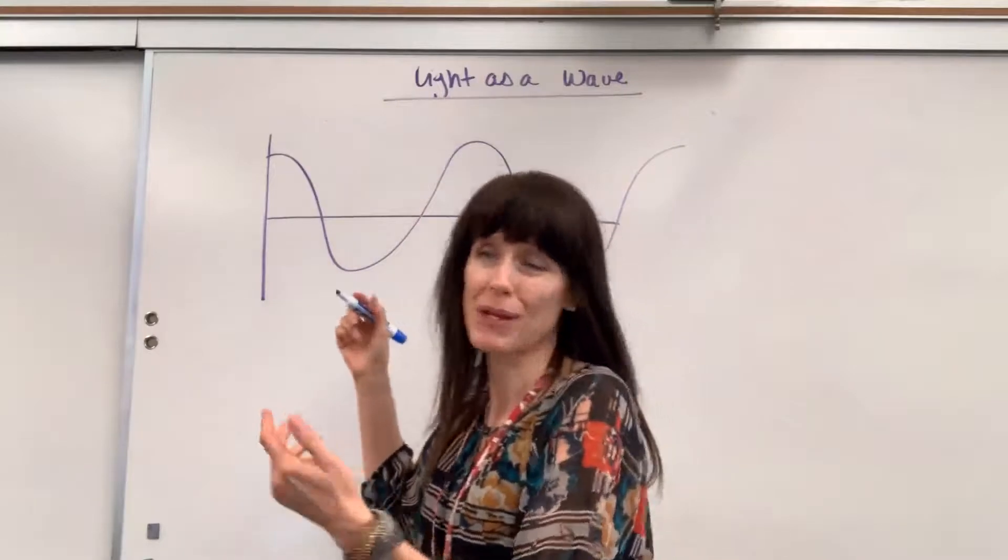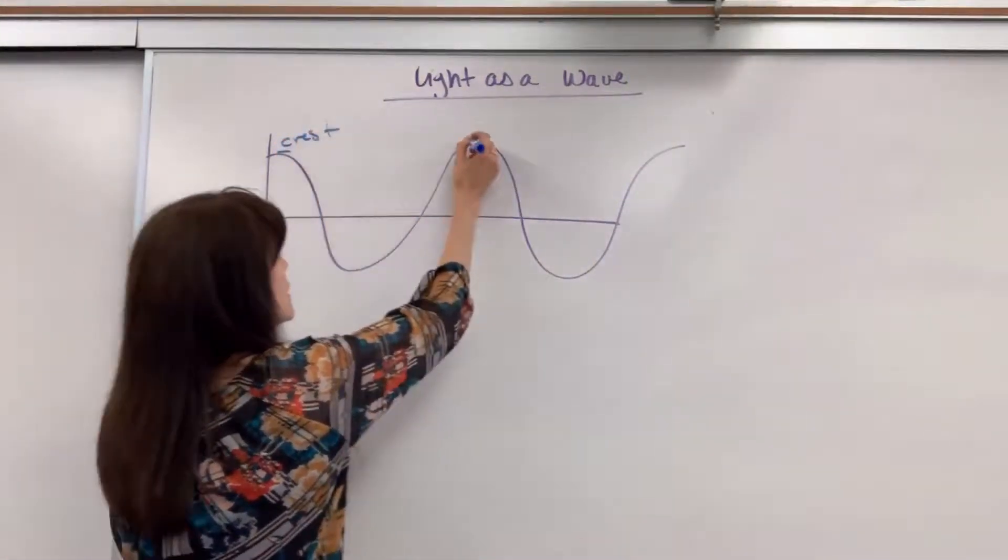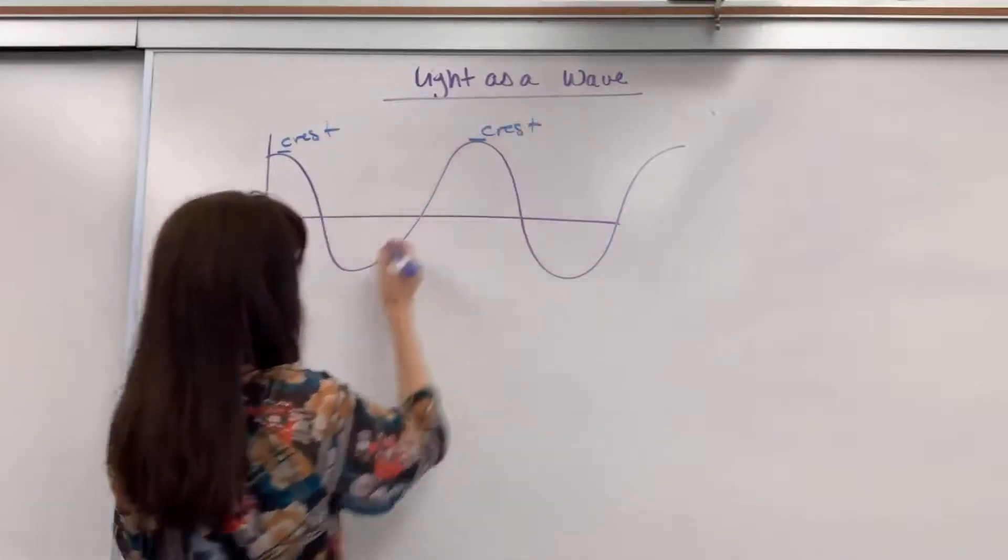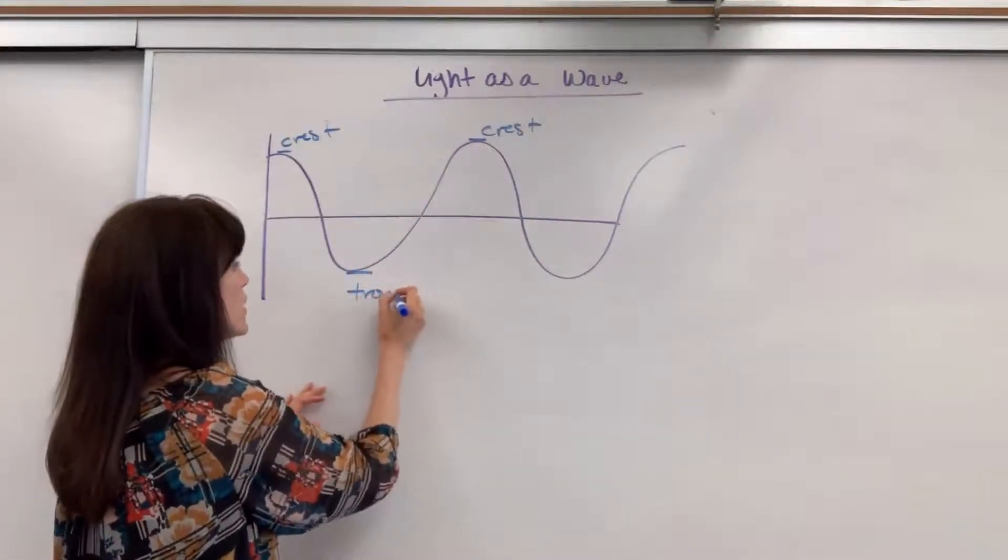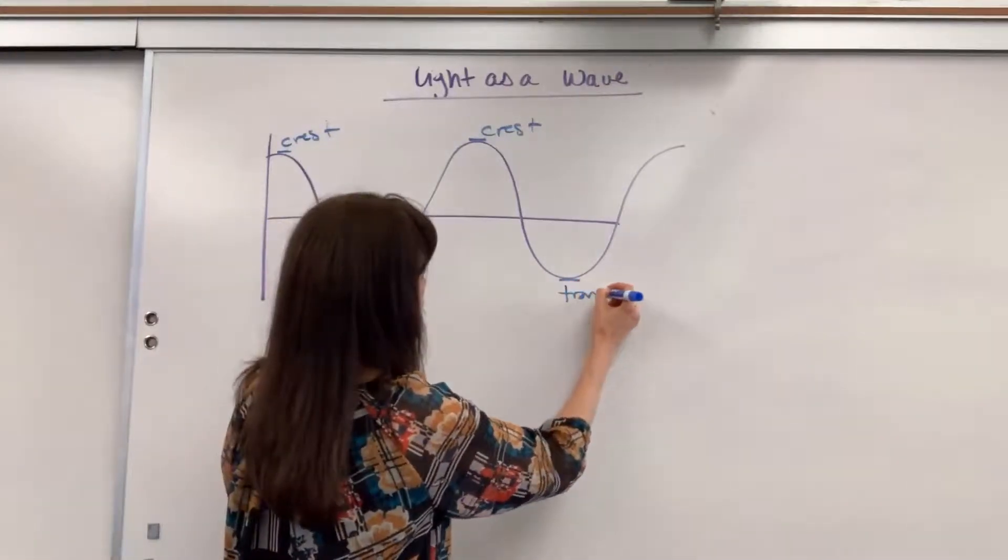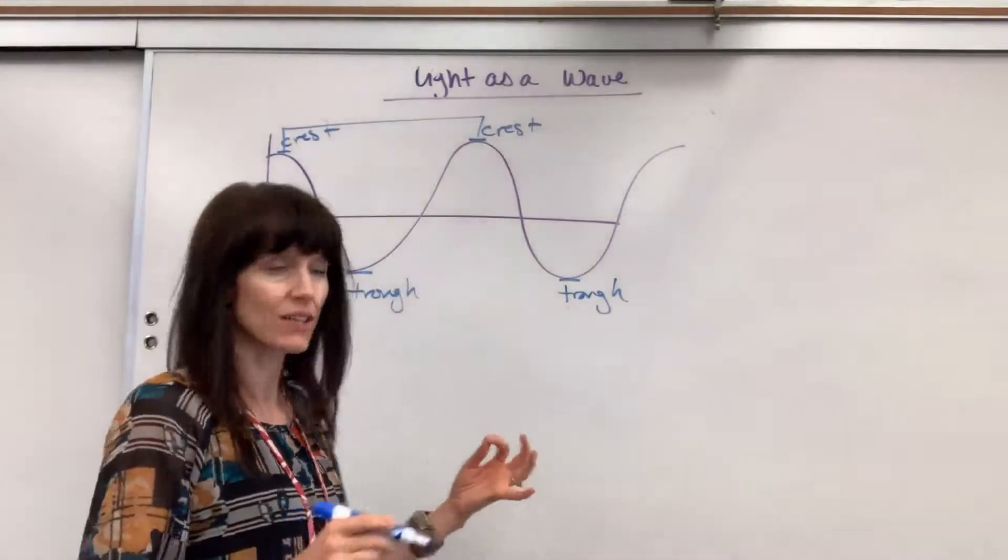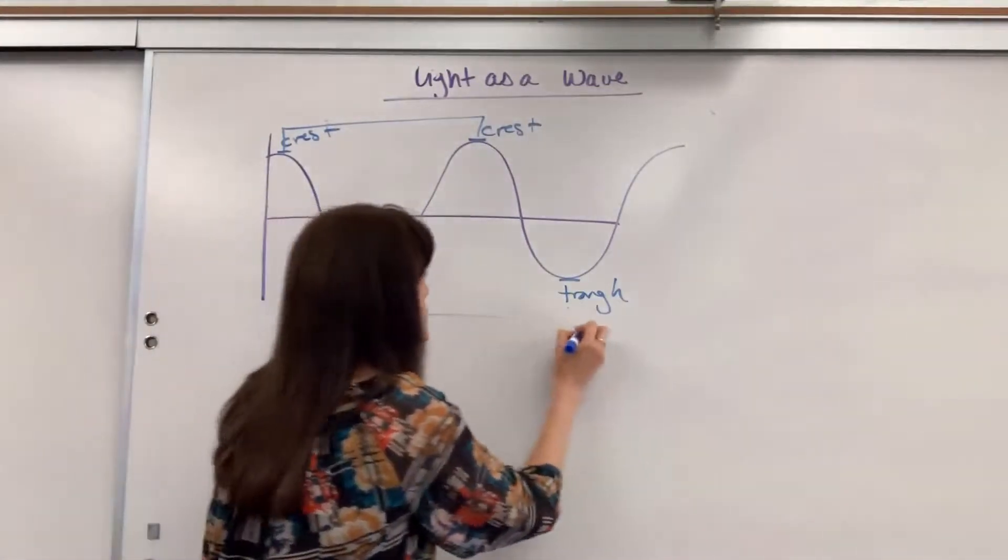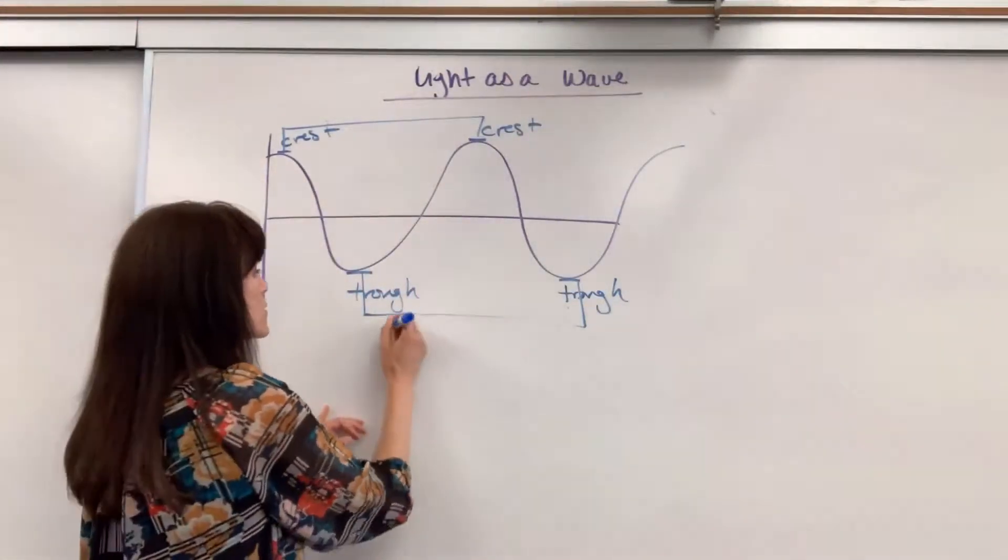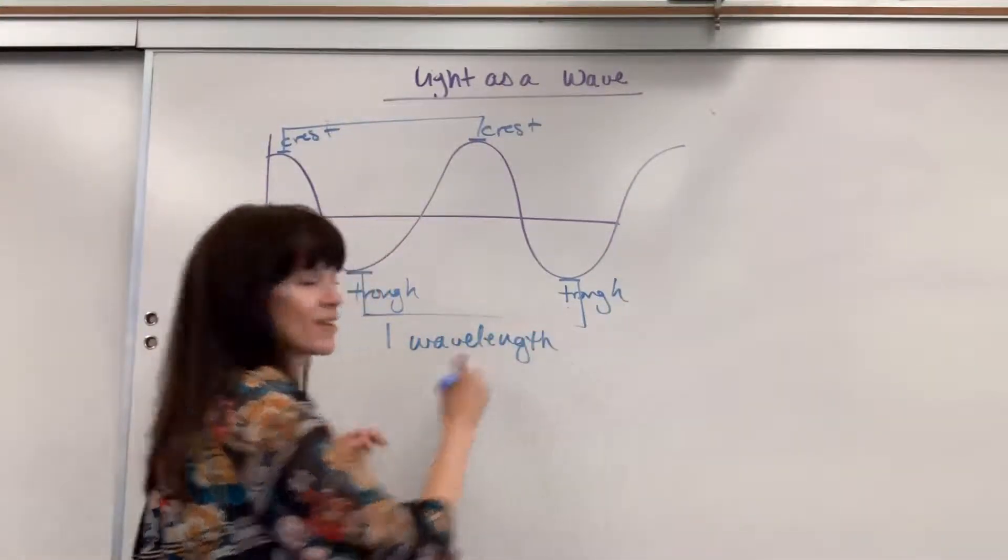A few things, vocabulary words that you need to know. The top of the wave is called a crest, and the bottom of the wave is called the trough. Now when I say a wave, that means the distance from one crest to the next adjacent crest, or one trough to the next adjacent trough. That would be considered one wavelength.